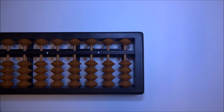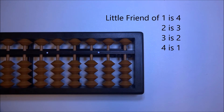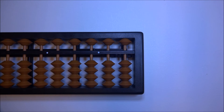Let's once again talk about little friends in relation to base 5. The little friend of 1 is 4, little friend of 2 is 3, little friend of 3 is 2, and little friend of 4 is 1. So why are we talking about little friends again?